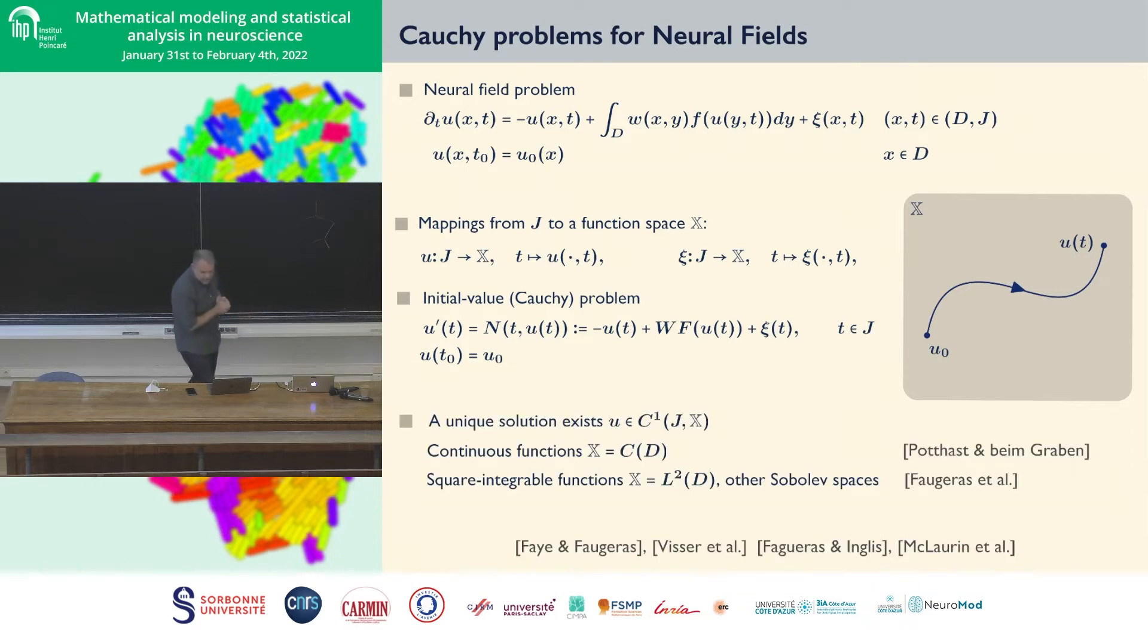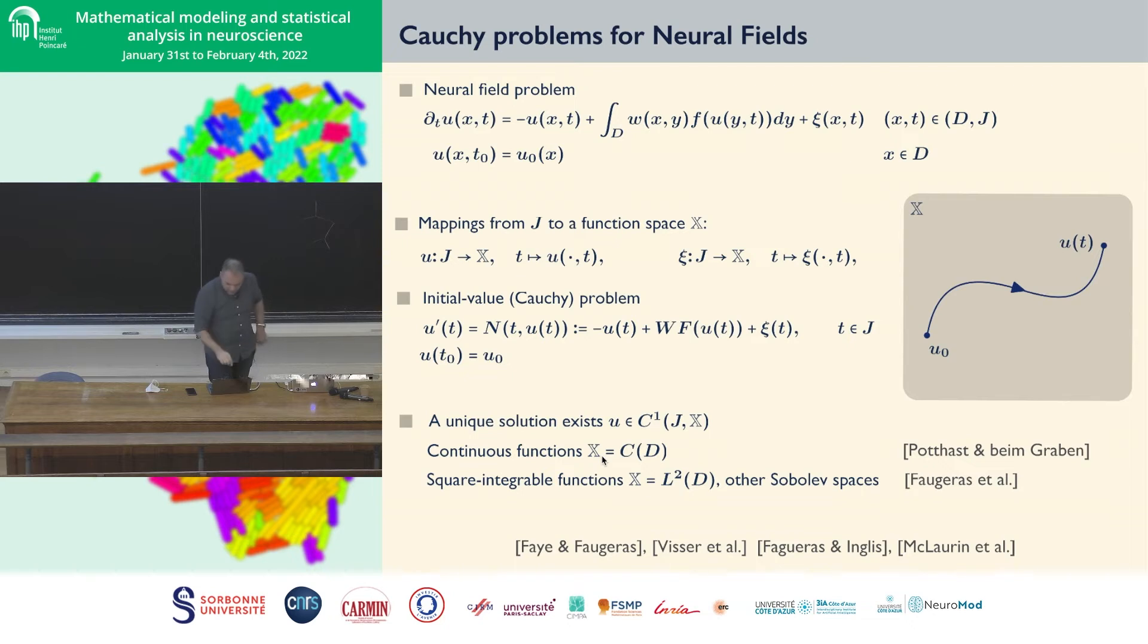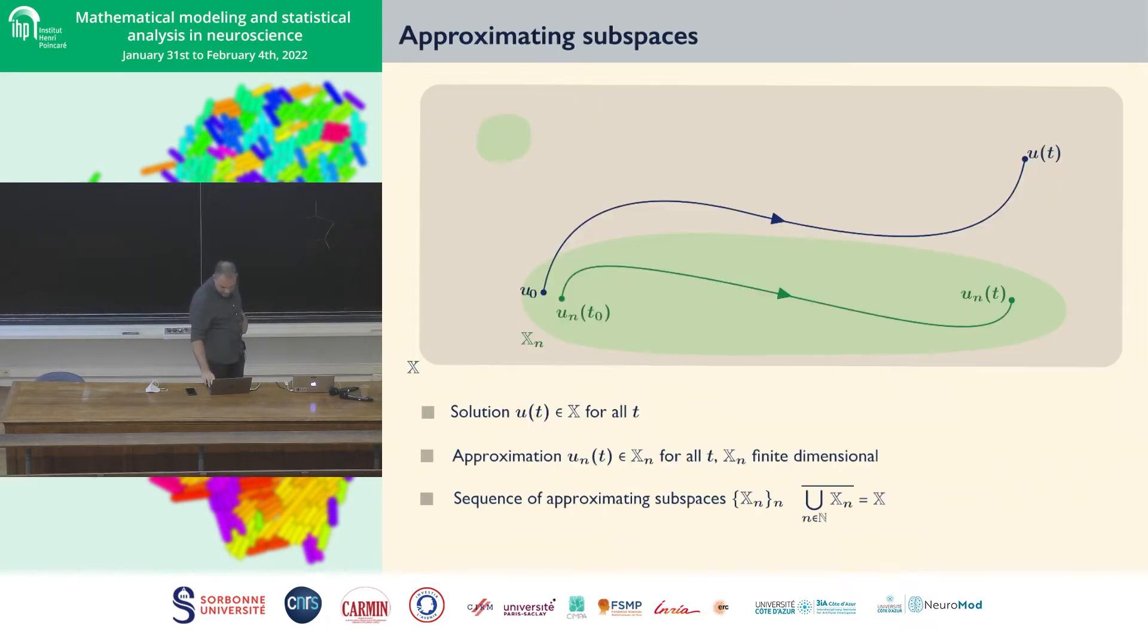Once you introduce formally this notion, and you introduce integral operators and pointwise operators, once you do that step you now have an ODE posed on an infinite dimensional dynamic system. Faugera and collaborators studied this. They proved that a unique solution exists for this Cauchy problem when x is L2, when you're looking at spaces of square integrable functions, and in fact even spaces with irregularity HM. We also have similar results from Potts and Bingraben when the ambient space is the space of continuous functions. These two setups will be important for me. There are contributors that have worked on delayed differential equations and stochastic versions of neural fields.